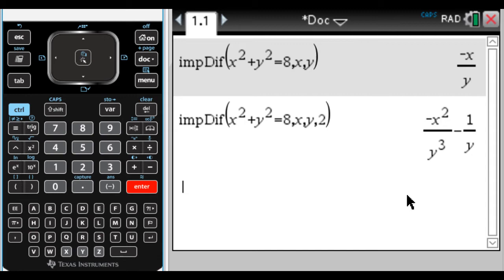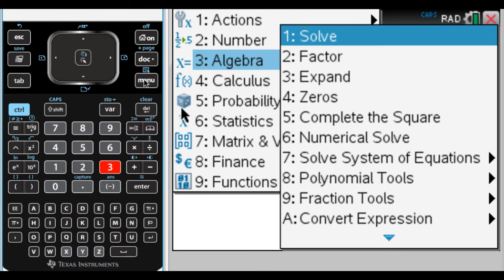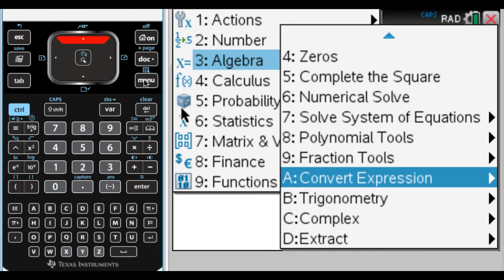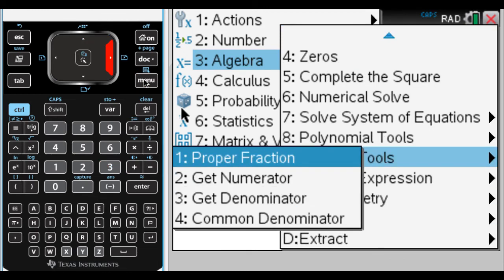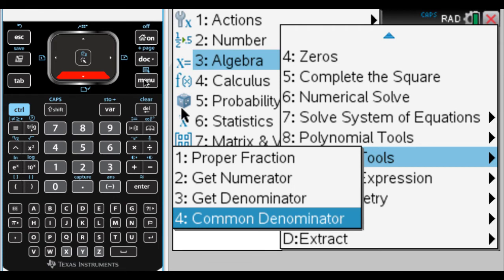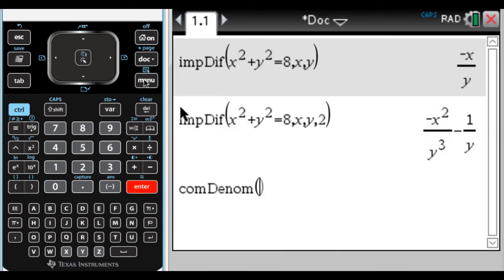But what it does is it's almost never simplified. So what we can do is get a common denominator. I'm going to have the calculator do that. So press menu, go to algebra, press up, you can go to fraction tools, and option 4 is common denominator. So I'll choose that, and I want to do the common denominator of the answer.